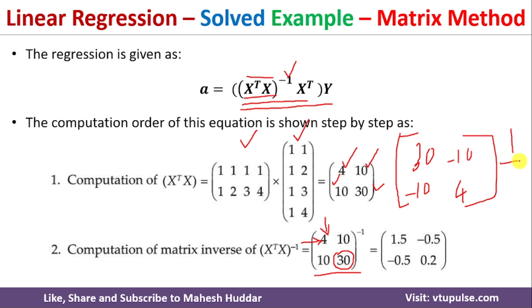Dividing the cofactor matrix by the determinant of 20: 30/20 = 1.5, 10/20 = 0.5, 10/20 = 0.5, 4/20 = 0.2. So the inverse of X^T * X is [[1.5, -0.5], [-0.5, 0.2]]. If you have a calculator you can compute this directly, but the manual process is: calculate the cofactor matrix and divide by the determinant.